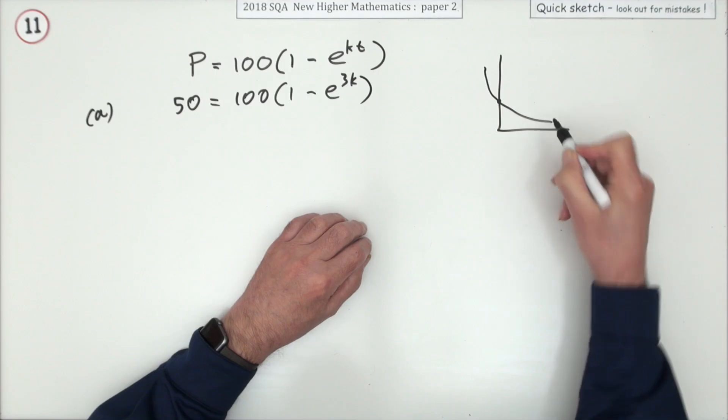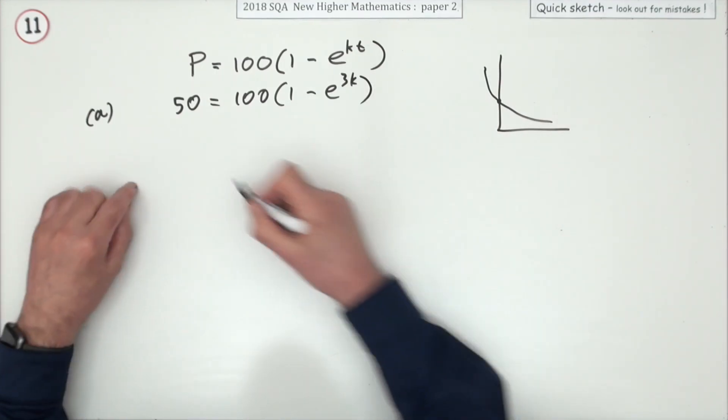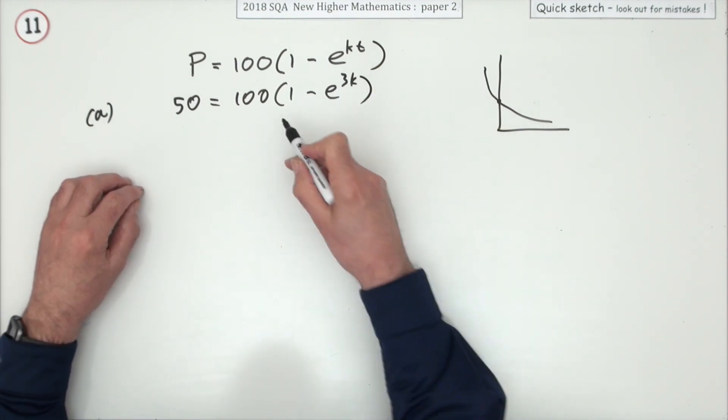You don't need to do this, I'm just mentioning it. So that means it starts at one and falls away, so you're expecting this to be a negative power. But anyway, you don't need to do that. Just solve that. Now you've only got one unknown, so start getting rid of all the bits. Take the 100 across and divide.